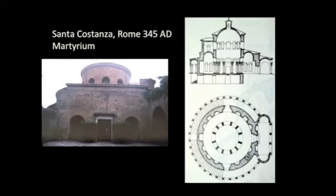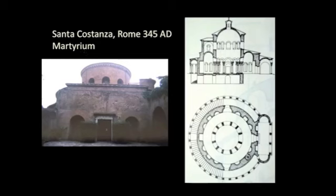Constantine probably never converted to Christianity, or if he did, it was a deathbed conversion — some stories say he said 'yeah, okay, Christianity, why not?' But his daughter Constancia was a Christian, and when she died she was buried in this little martyrium. A martyrium is a type — a tomb for a martyr — and it is typically a centralized building. The Santa Costanza establishes the type, and as we move forward you see variations on the theme.